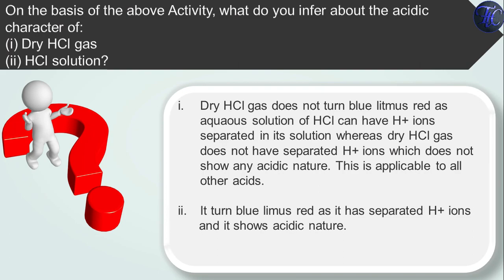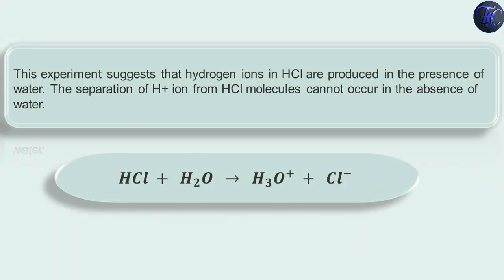And what about HCl solution? It turns blue litmus paper to red as it has separated H+ ions and it shows acidic nature. This is why wet blue litmus paper has turned to red because in wet blue litmus paper water is present. If that HCl gas will react with blue litmus paper, as I already said that in aqueous solution HCl will produce H+ ions. This experiment suggests that hydrogen ions in HCl are produced in the presence of water. The separation of H+ ions from HCl molecule cannot occur in the absence of water.